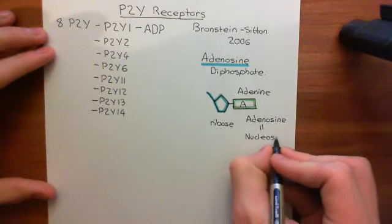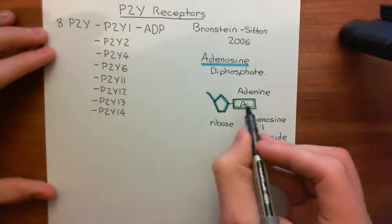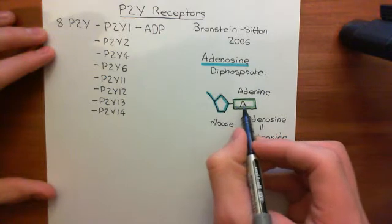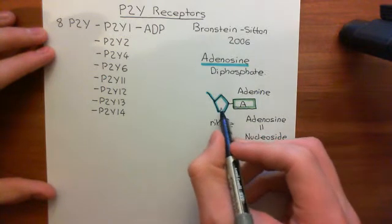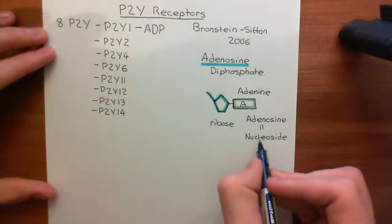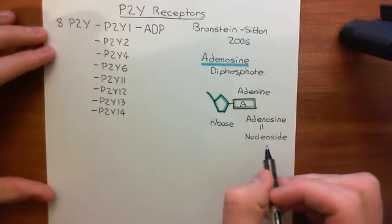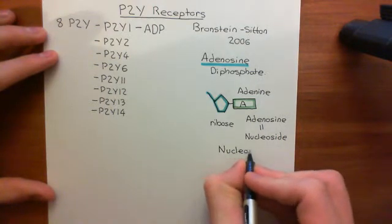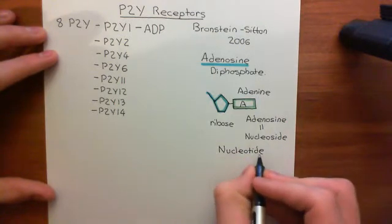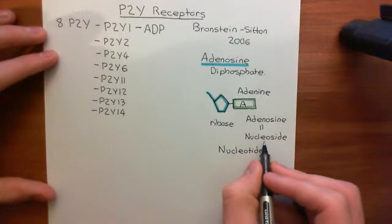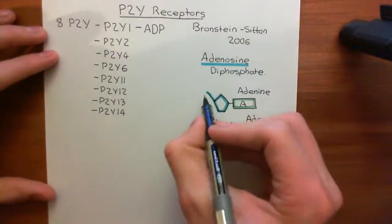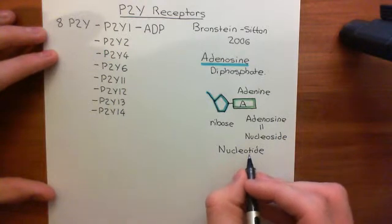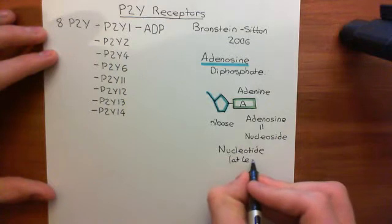A nucleoside means an organic base — such as adenine, cytosine, guanine, thymine, or uracil — attached to a ribose sugar. Adenosine is an example of a nucleoside, but there are others. Contrast this to the term nucleotide, which is the more commonly used term than nucleoside. A nucleotide means a nucleoside where we have attached one or more phosphate groups. A nucleotide doesn't specify how many phosphate groups — it just requires at least one phosphate group to have been added.